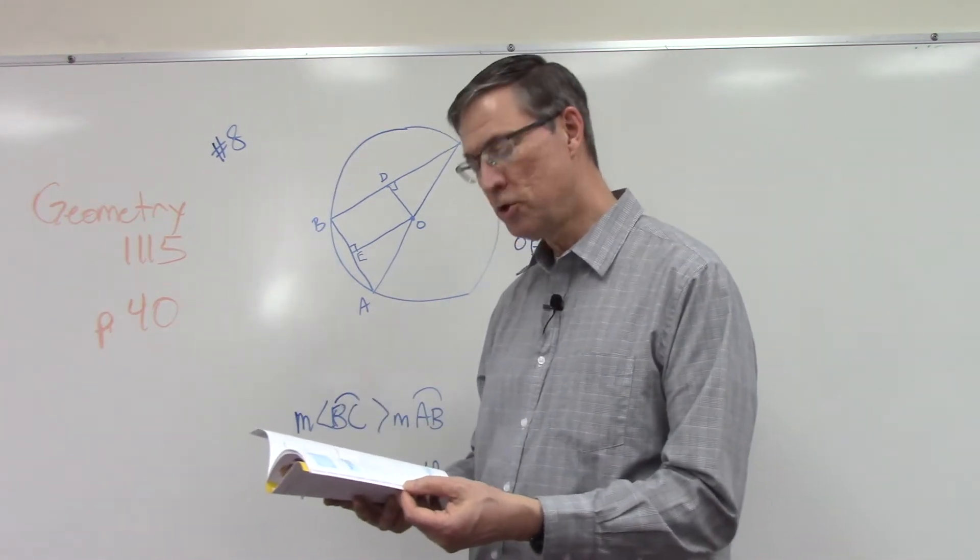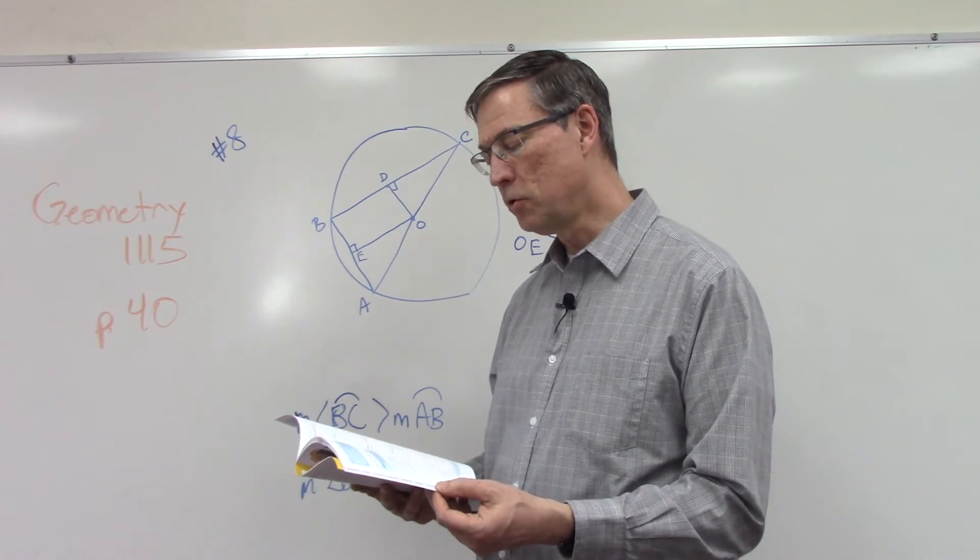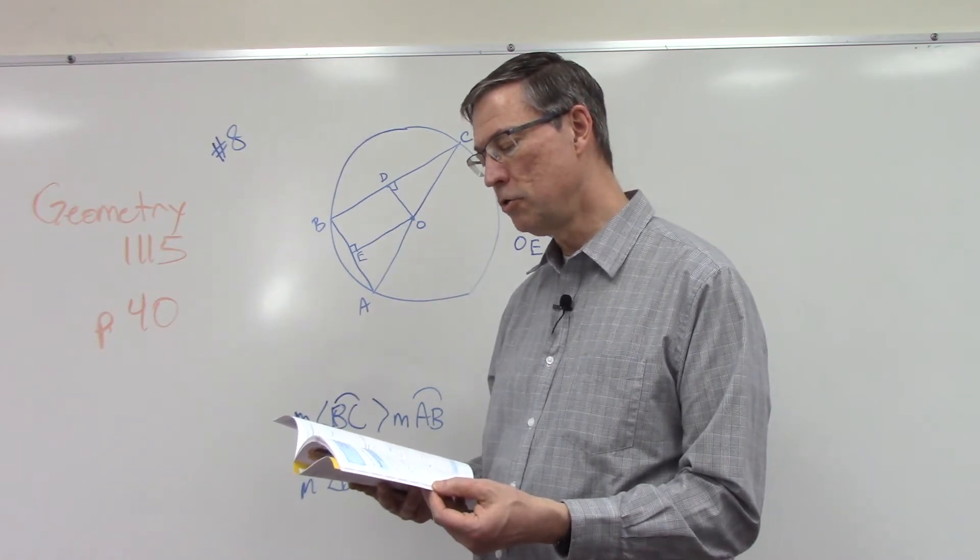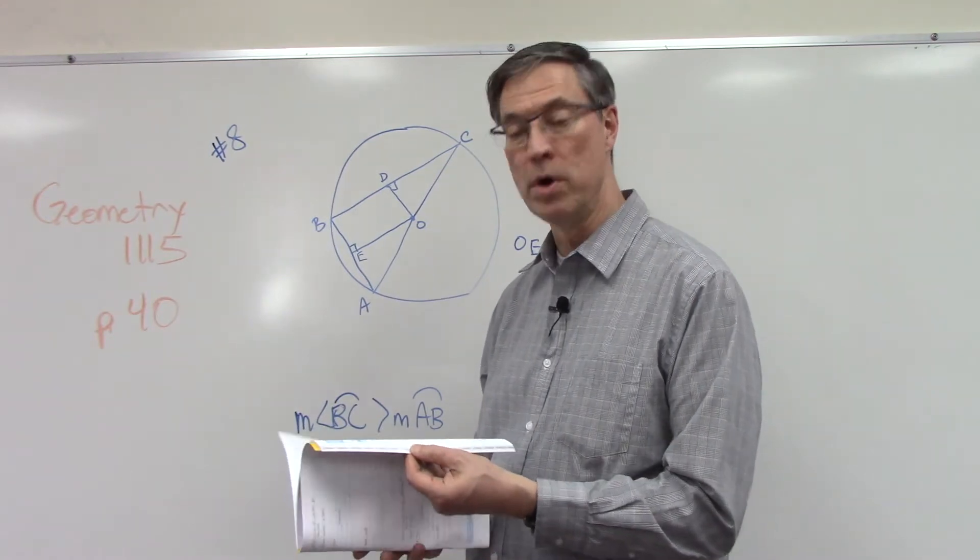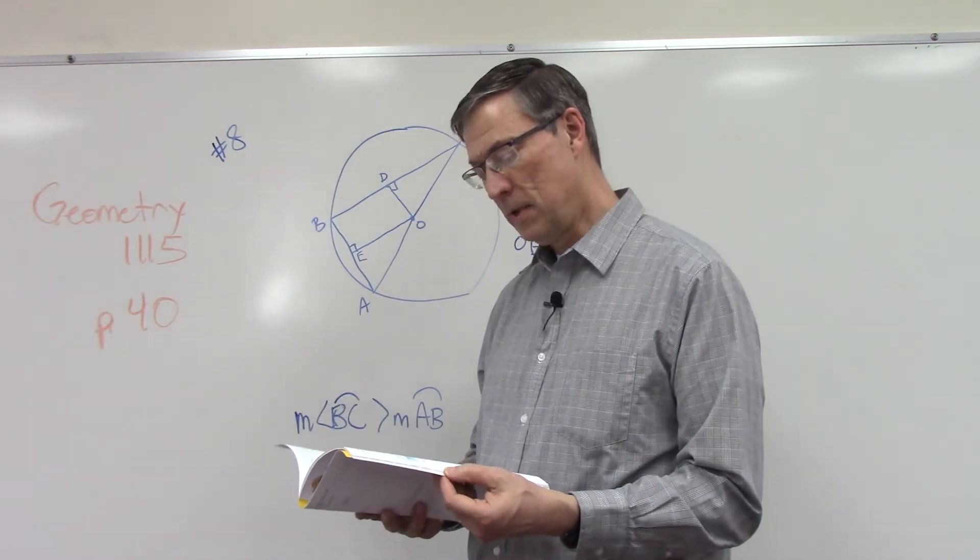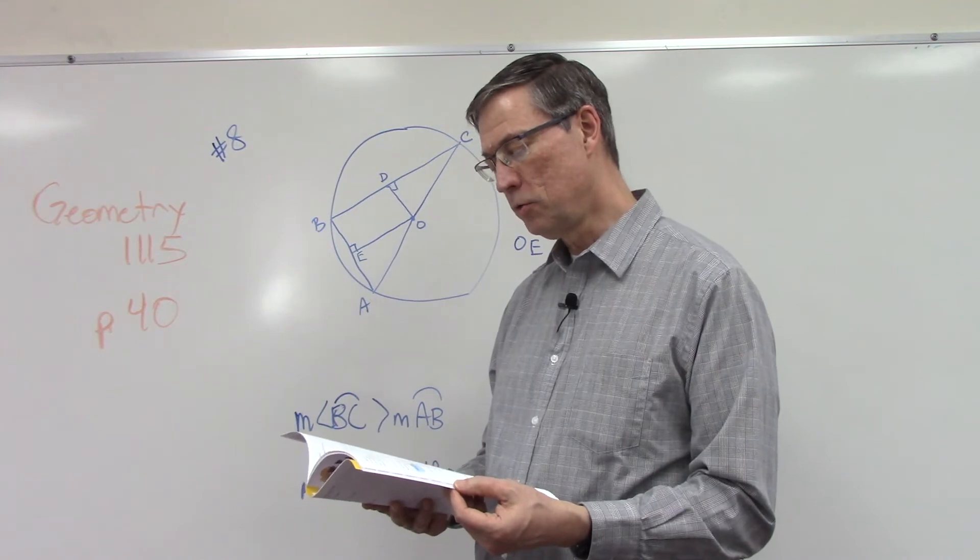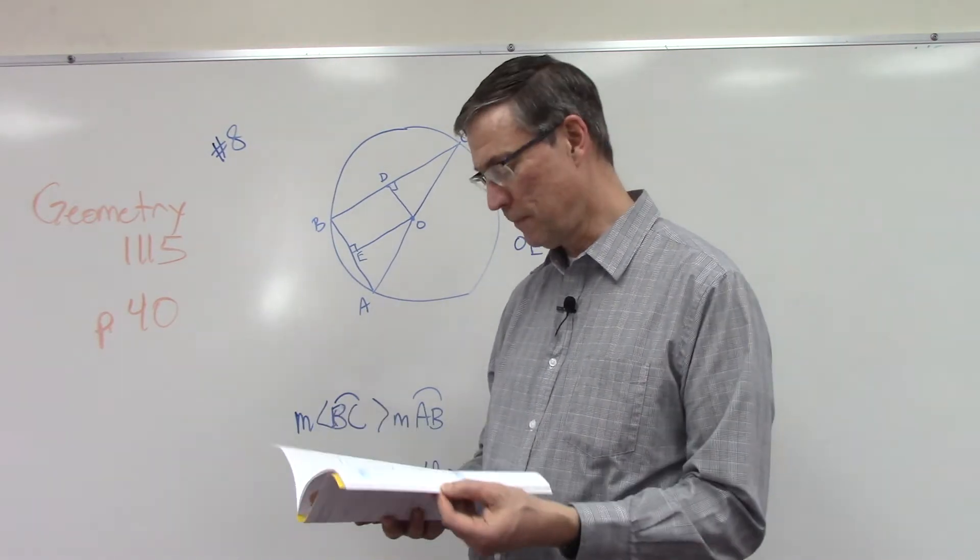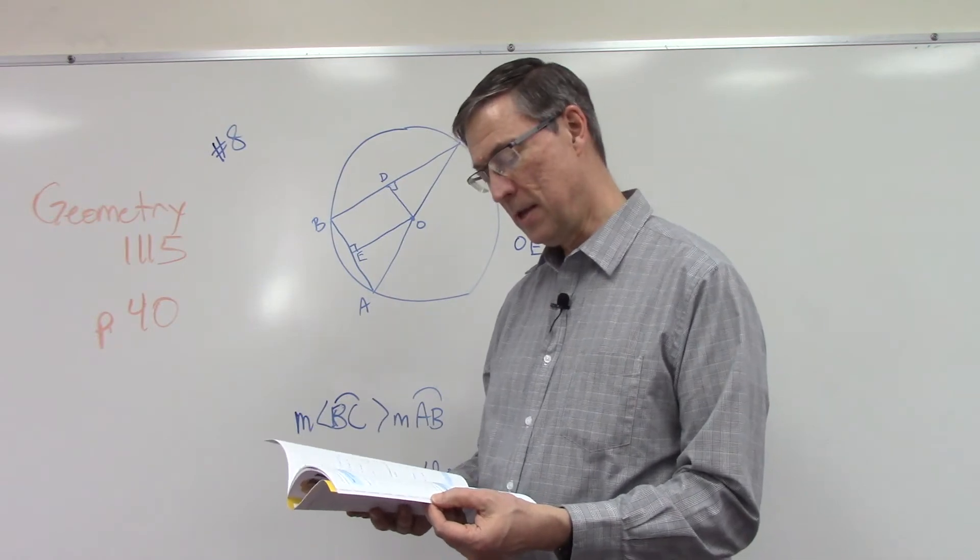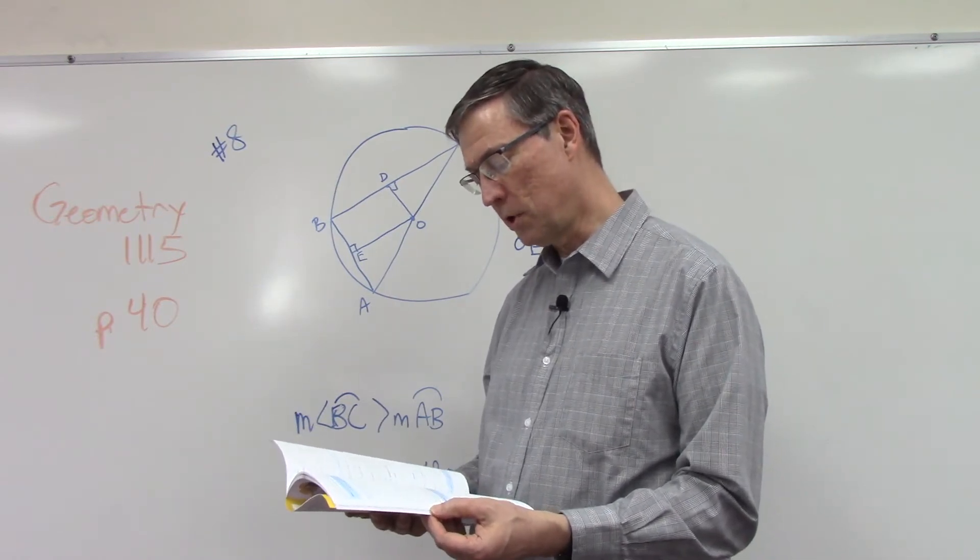Theorem 80: if in the same circle two arcs are not congruent, then the larger arc determines the longer chord. Theorem 79: if two chords are not congruent, then the longer chord determines the larger arc.